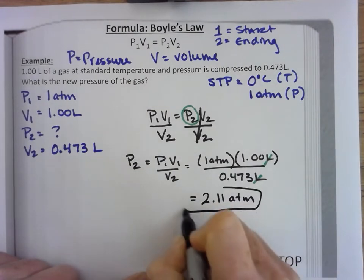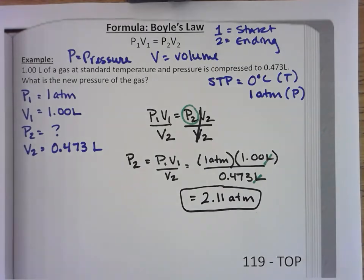ATM and that is my answer. So if I have a liter of gas at standard temperature and pressure and I compress it to about a half a liter, the pressure is going to increase to 2.11 atmospheres.